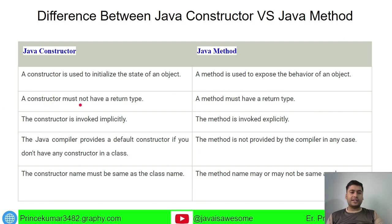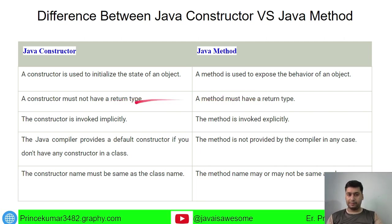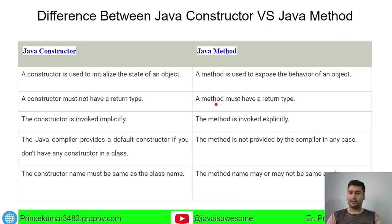A constructor must not have a return type — constructors do not support any return type, and if you write one it will give an error. A method, however, must have a return type; if you don't provide a return type for a method, it will also give an error.